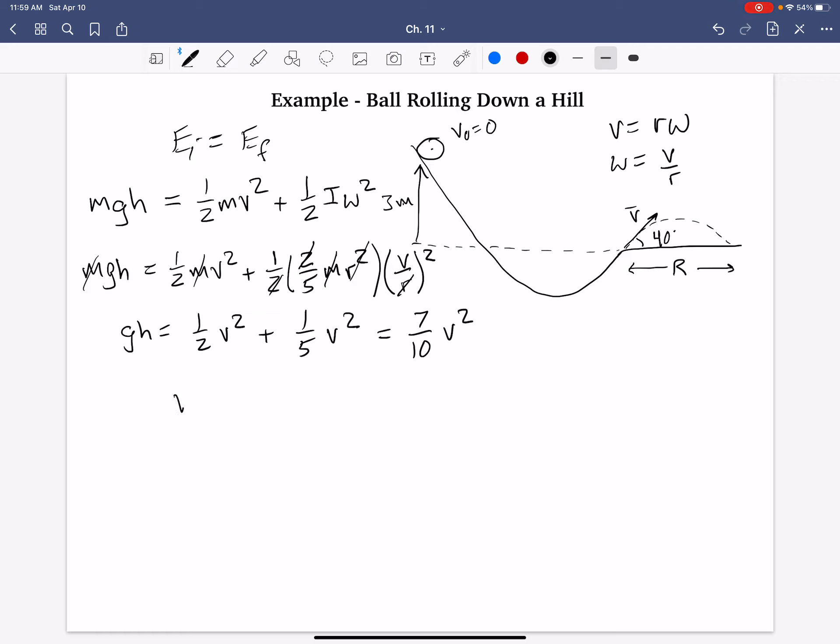And, now, solving for v gives us an expression of square root of ten gh over seven. And, g is a constant, 9.81. The initial height, I know it got buried in here, but that's three meters. So, that's three. And, divided by that seven square root, we should get approximately for that launch speed about 6.5 meters per second.